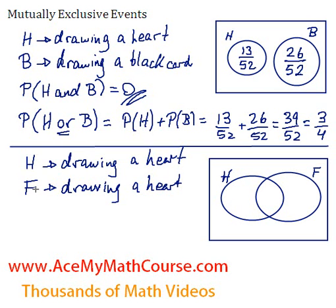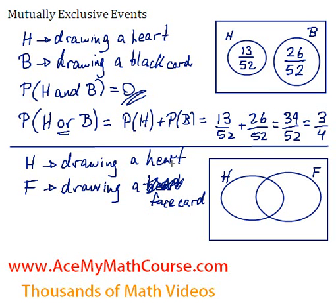These events are not mutually exclusive, because you can draw a face card that is also a heart. You can draw a card of the heart suit that is also a face card, because there is the jack of hearts, the queen of hearts, and the king of hearts. So there are 3 cards out of 52 that are both hearts and face cards.